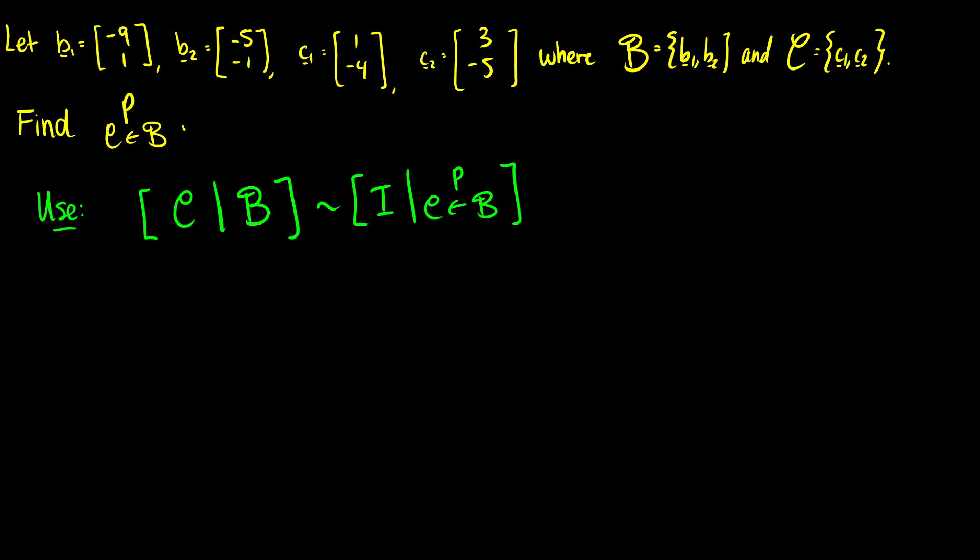So the easiest way we can do this is we can do some row reduction. So we can take a partition matrix where our vectors of C are on the left side, and the vectors of B are on the right, and we reduce C down to the identity. And what we're left with is the change of basis matrix from B to C.